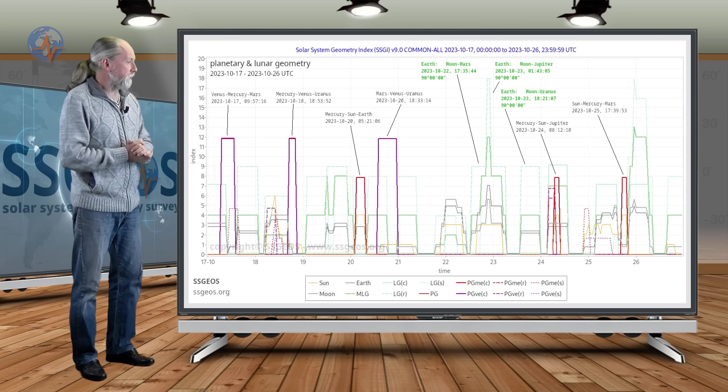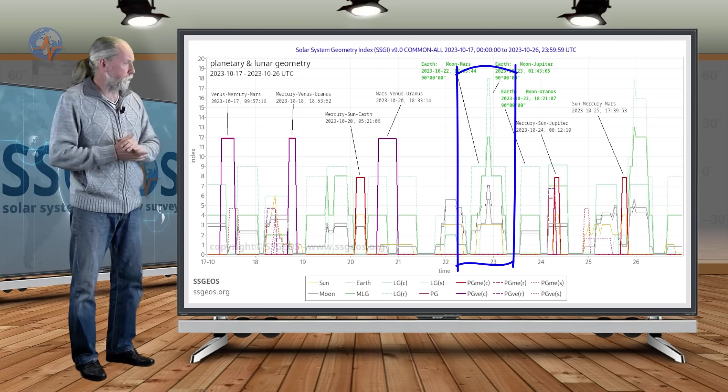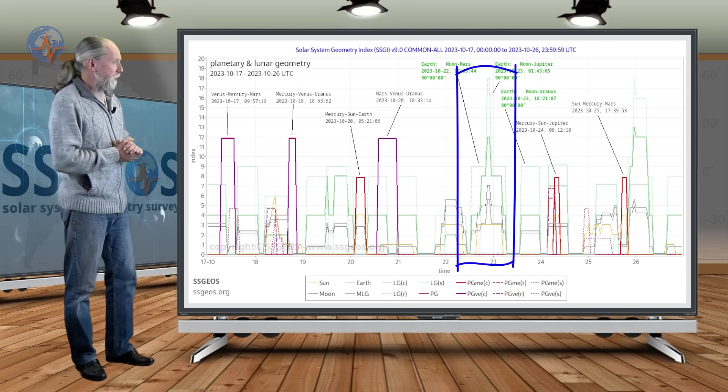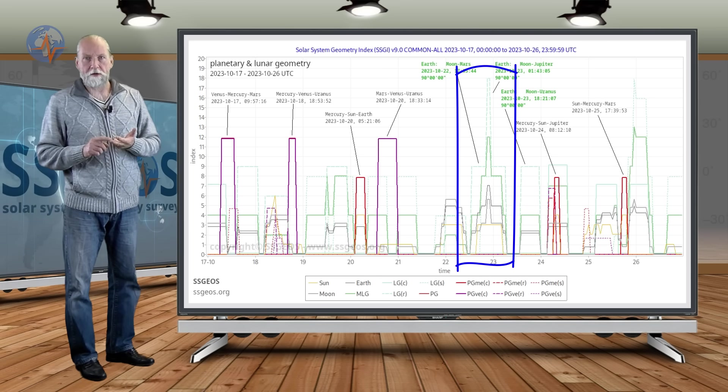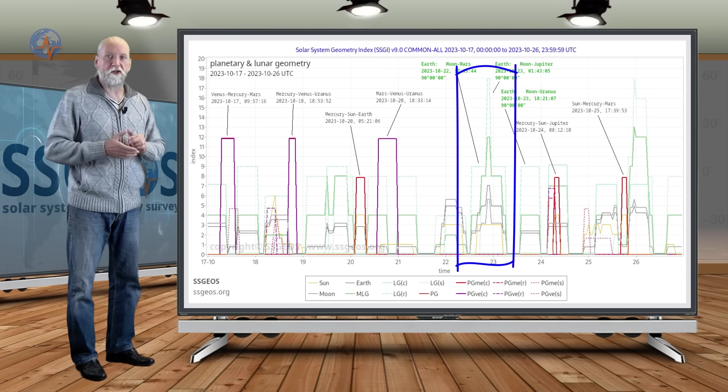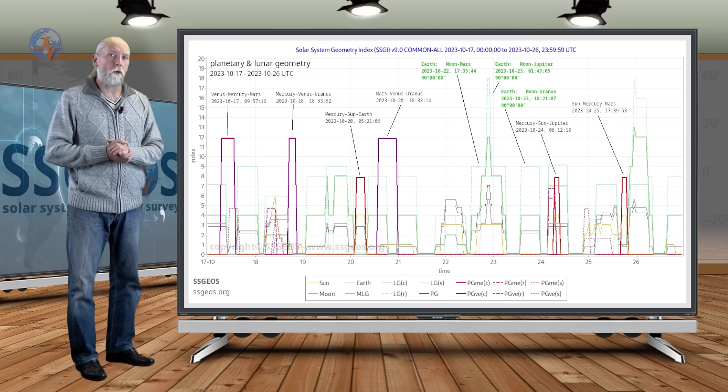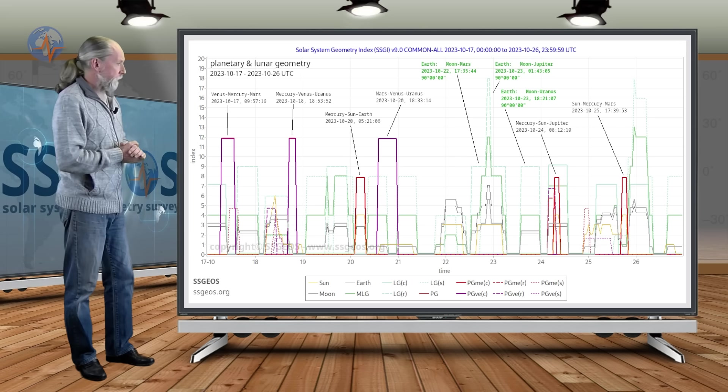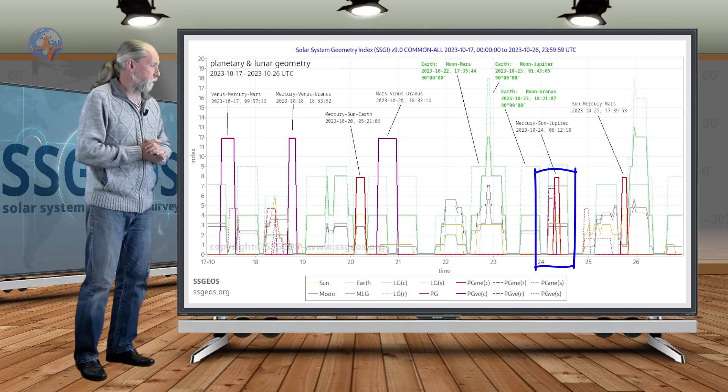Then later in the week on the 22nd, 23rd, there will be a convergence of critical lunar geometry, especially the right angles with Mars, Jupiter, and Uranus. And that will be in an opposite fashion, and that makes things critical. You can easily see a major seismic activity following that lunar geometry.